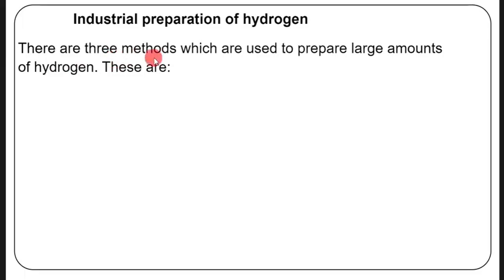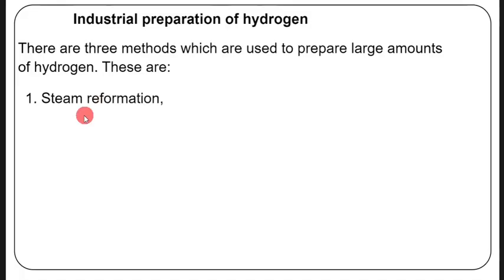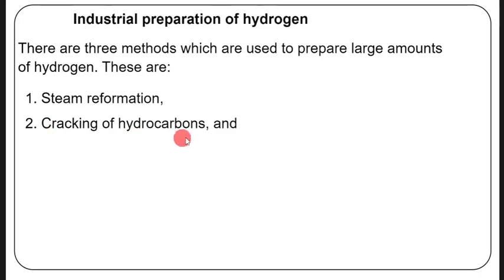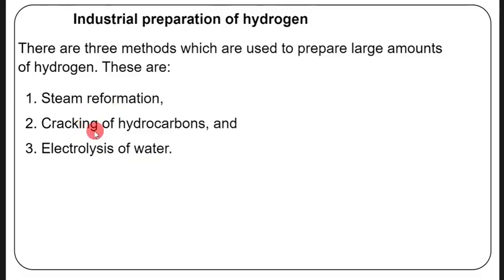There are three methods used to prepare large amounts of hydrogen in industry. Number one: steam reformation. Number two: cracking of hydrocarbons. Number three: electrolysis of water — though this one is not common. Steam reformation and cracking of hydrocarbons are the two most common methods.